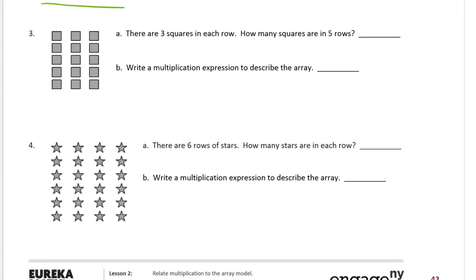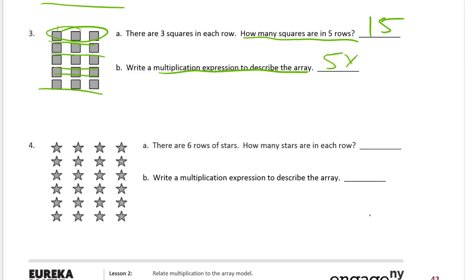And then we'll get down to number three. There are three squares in each row — there's a row right there with three squares in it. How many squares are in five rows? So the whole array has five rows in it: one, two, three, four, five. You can count them all — there's 15. You can count them by threes if you wanted: three, six, nine, twelve, fifteen. You can skip count that way. Write a multiplication expression to describe the array. So we've got five rows of three equals fifteen.